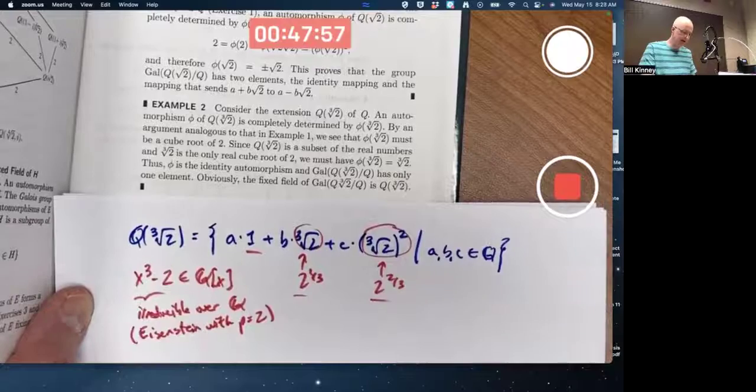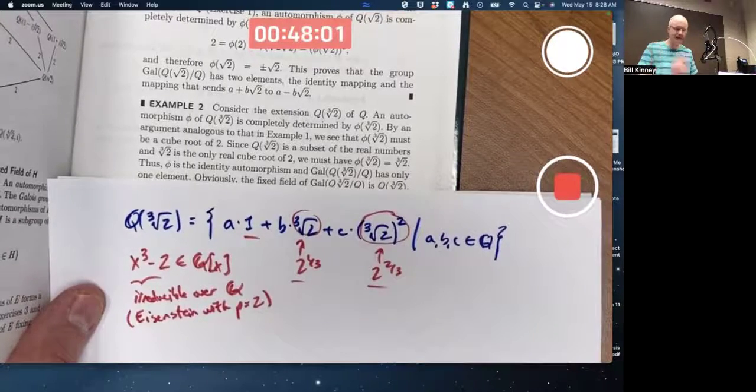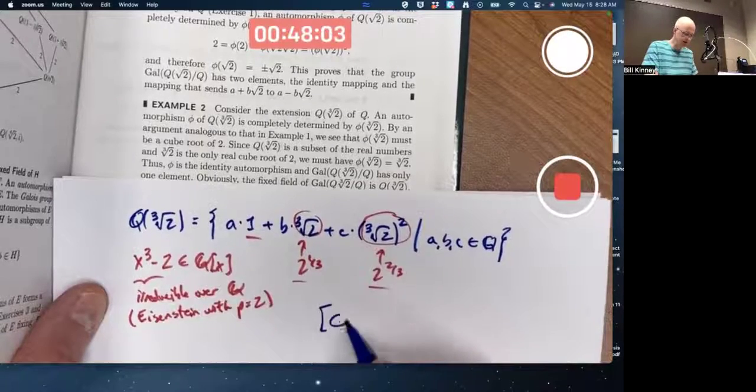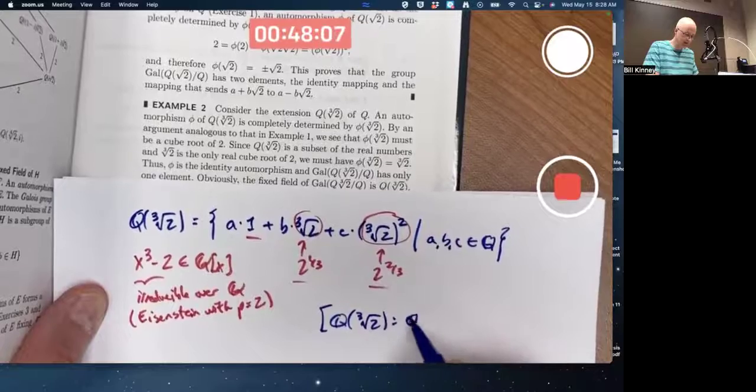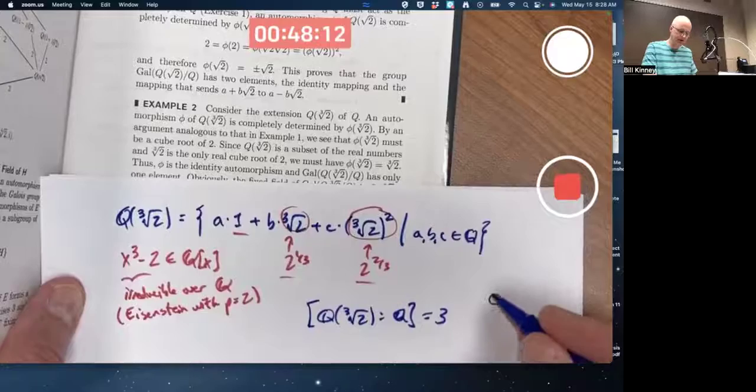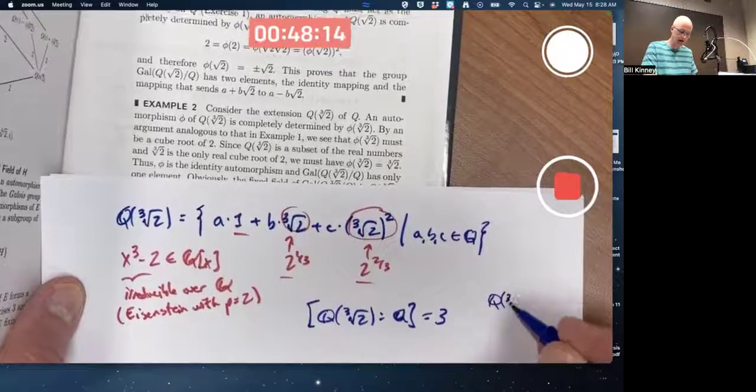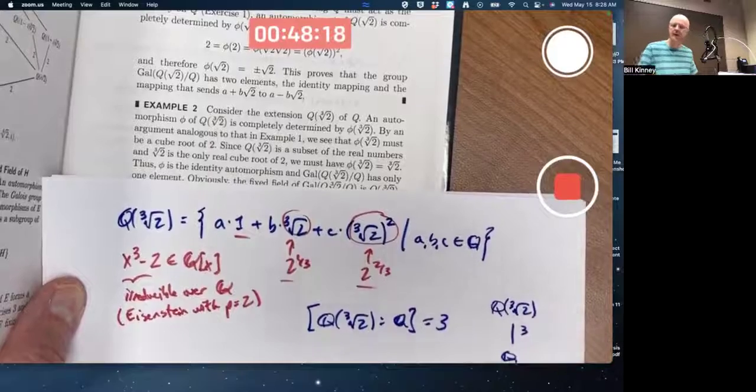And that means the dimension of this as a vector space over the rationals is 3. The degree of the field extension is 3. And we could make a tower of fields seemingly like this and write a 3 there.